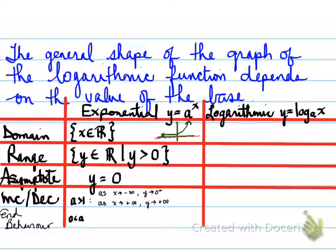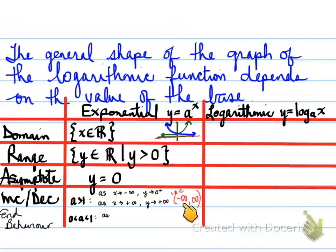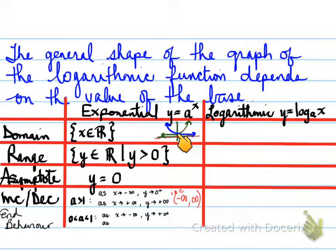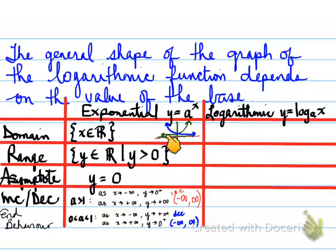When the base is between 0 and 1, the function looks different. The green graph is forever increasing from negative infinity to positive infinity. For the blue graph, as x approaches negative infinity y approaches positive infinity, and as x approaches positive infinity y approaches 0 from the positive side. This blue graph is consistently decreasing on the entire interval from negative infinity to infinity.